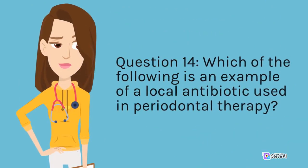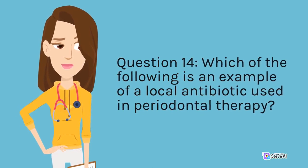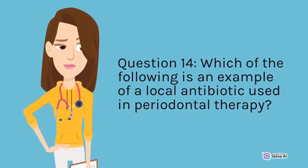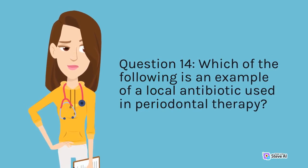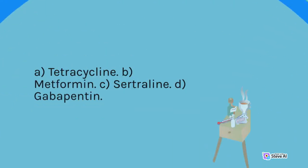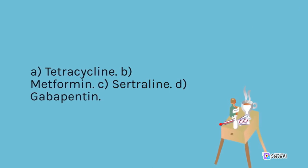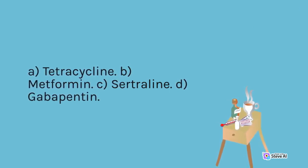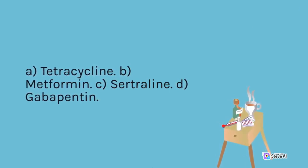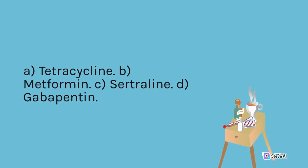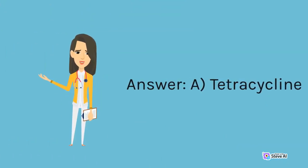Question 14. Which of the following is an example of a local antibiotic used in periodontal therapy? A. Tetracycline. B. Metformin. C. Sertraline. D. Gabapentin. Answer: A. Tetracycline.